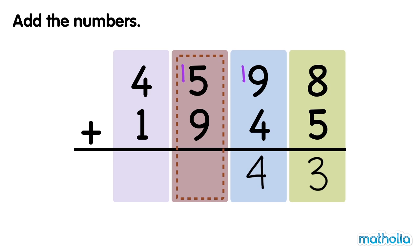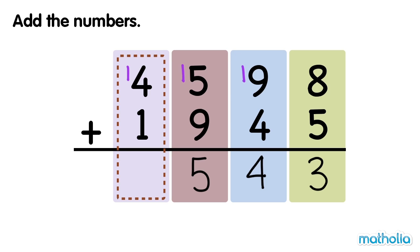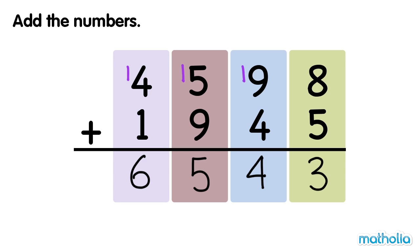Add the hundreds: 1 hundred plus 5 hundreds plus 9 hundreds equals 15 hundreds. Regroup 15 hundreds into 5 hundreds and 1 thousand. Add the thousands: 1 thousand plus 4 thousands plus 1 thousand equals 6 thousands. So 4,598 plus 1,945 equals 6,543.